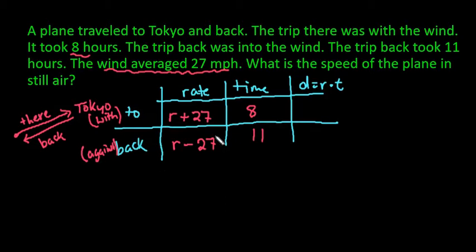Any time that you are going against the wind, the time should take longer, so that makes sense the way that we have it set up. So with this, we would do 8 times r plus 27, and we would do 11 times r minus 27. So if I go ahead and distribute those values just to make it easier to work with, we would have 8r plus 216.